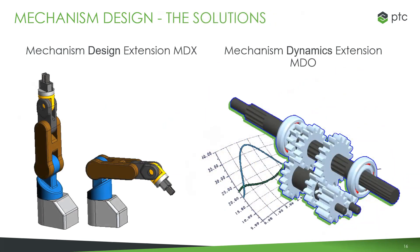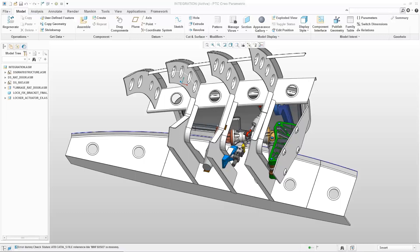That's a quick overview of the mechanism design capabilities in Creo — building out designs for how they're going to work in the real world. Now I'll switch over and take us through a quick demo of what that looks like from within Creo. For our demonstration, we're going to be working on a large assembly — a turbine system — with a lot of different components.